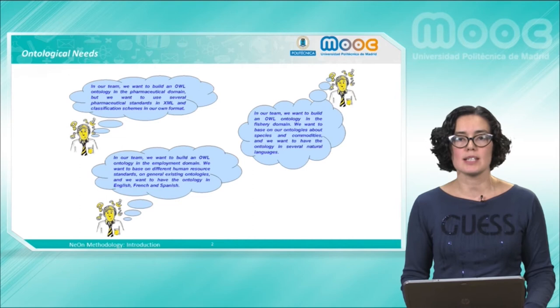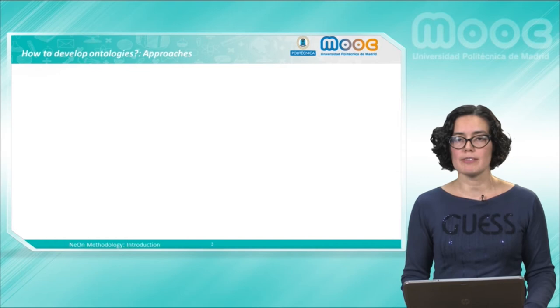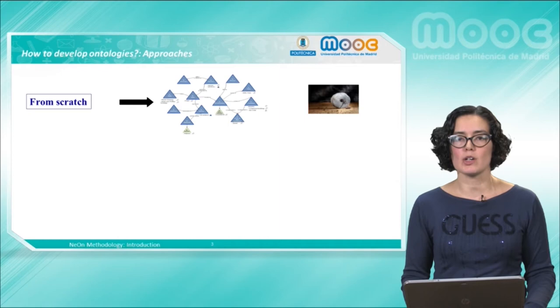To develop ontologies, there are different approaches. A possibility is to start from scratch modeling the required domain. In this case, we can reinvent the wheel, or even worse, invent the square wheel.